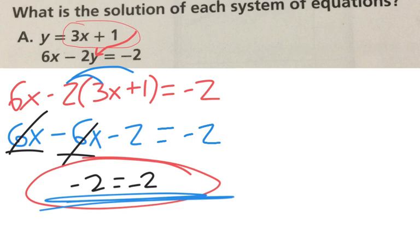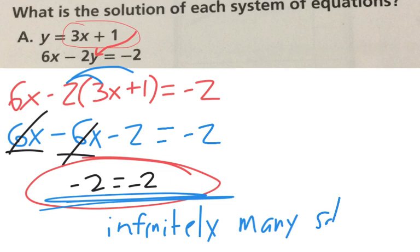So we are left with a mathematical statement. Negative 2 equals negative 2. Is that a true statement or a false statement? That is a true statement. It's a true statement. So when the x is canceled and you're left with a true statement, it's the same line. Therefore, you would get infinitely many solutions. So what do you think is going to cause us to get no solution? We'll look at that tomorrow.